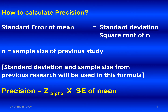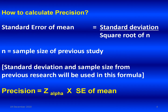How to calculate precision? For calculating precision, we need to know the standard error of mean from the previous research. Many research articles will not give standard error of mean in their published article, so we have to calculate it. Standard error of mean equals standard deviation from previous research divided by square root of n, where n is the sample size of previous research.